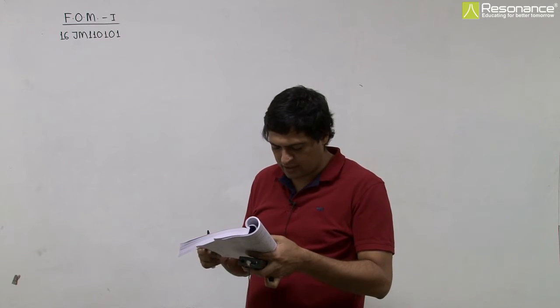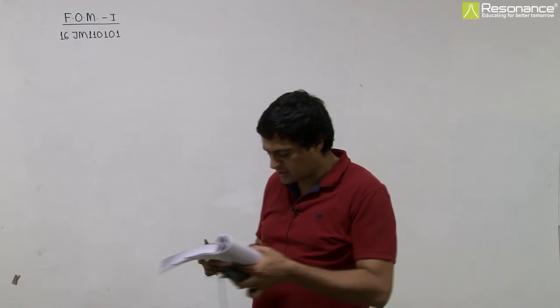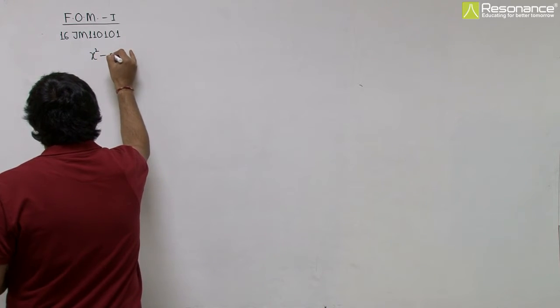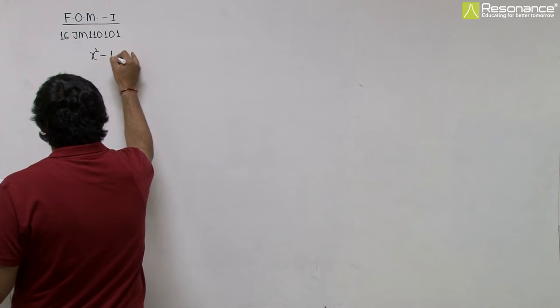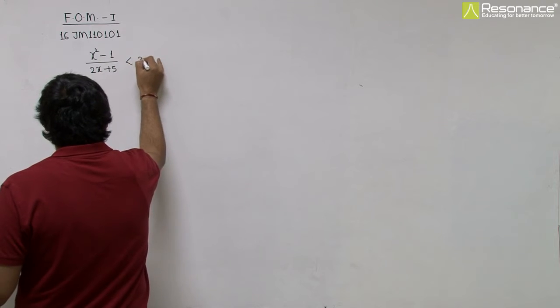In this question, we have to find the number of positive integers satisfying the inequality x square minus 1 upon 2x plus 5 less than 3.